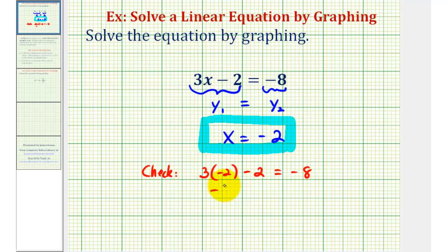Well, 3 times negative 2 is equal to negative 6. And negative 6 minus 2 is equal to negative 8. So this does verify our solution. And remember negative 8 was the y-coordinate of the point of intersection.